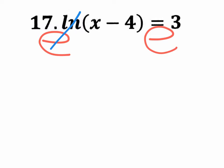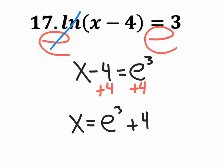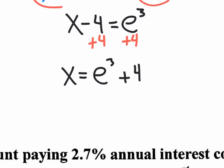There's of course an e button on the calculator. So this is really just adding four — there's your answer: x equals e to the third plus four. However, you don't want to leave that as your answer. This section's instructions say round to four decimal places, so you actually need to do this on the calculator.